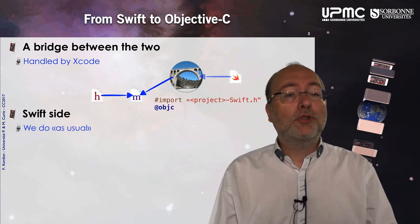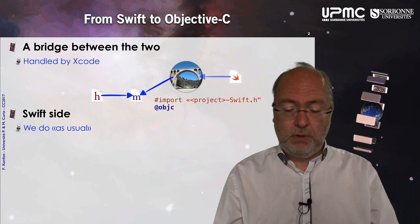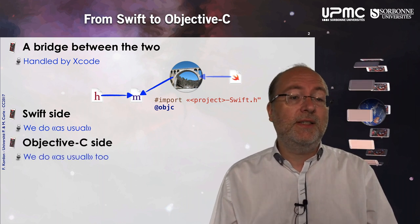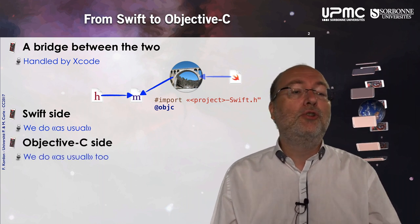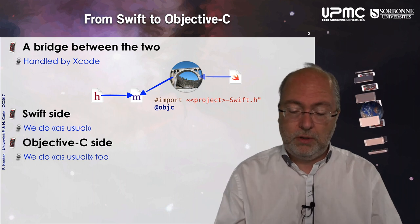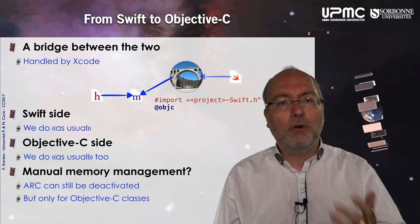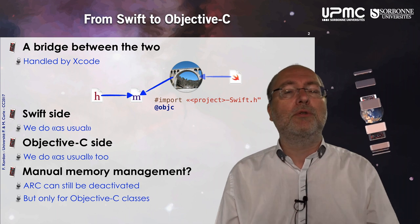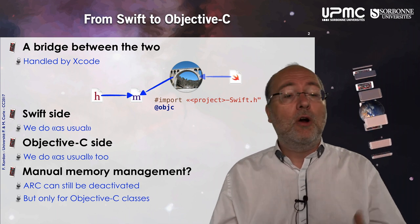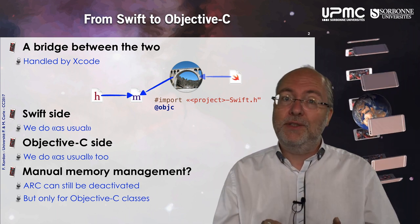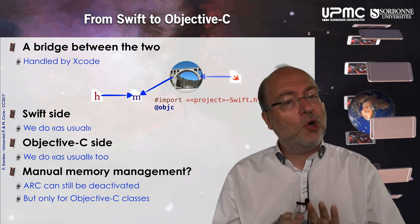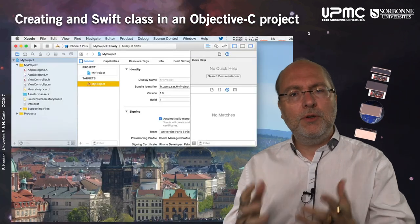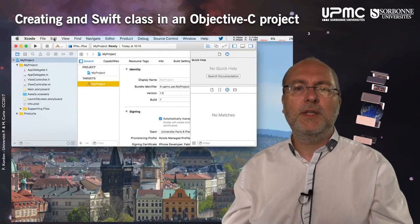On the Swift side you do as usual; on the Objective-C side you do as usual, and you can also play with manual memory management — of course, on the Objective-C side only. So let's have a look at the way you create this bridge.